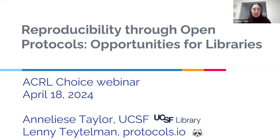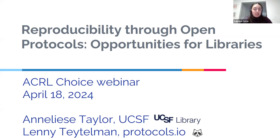I'd like to introduce our speakers for today. Annalisa Taylor, MLIS, is Head of Scholarly Communication at the University of California, San Francisco. She leads Scholarly Communication Support and Initiatives at the UCSF Library, is an advocate for open research practices, and has taught workshops and classes on open and reproducible science. Prior to UCSF, she was a science librarian at Bryn Mawr College and an engineering librarian at George Mason University. And Lenny Tatelman is co-founder and president of Protocols.io. Lenny did his graduate studies in yeast genetics at UC Berkeley, and his struggle with correcting a published research method as a postdoc at MIT led him to co-found Protocols.io, bringing a strong passion for open access, knowledge sharing, and improving research efficiency through technology.